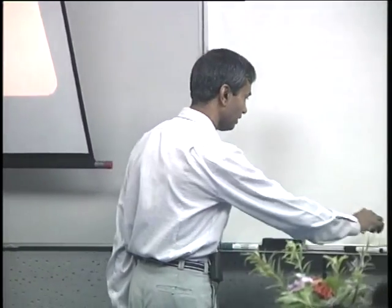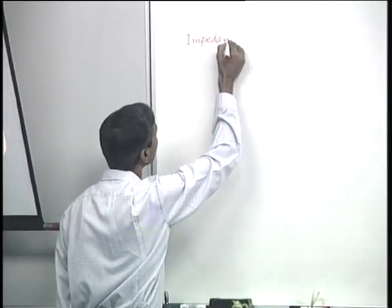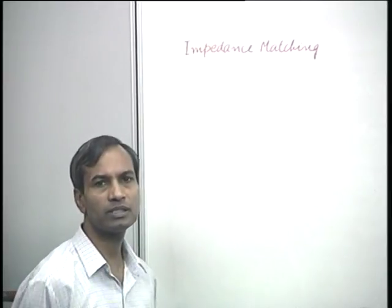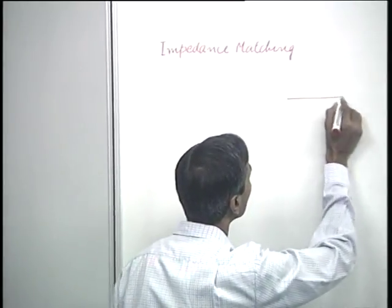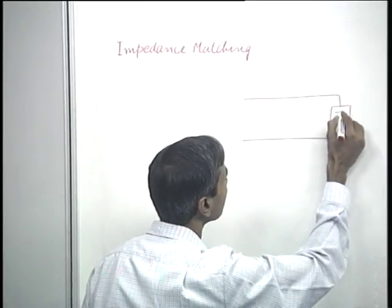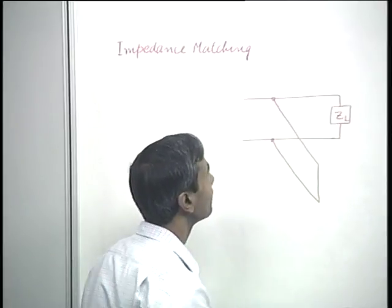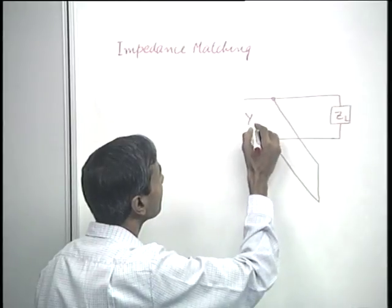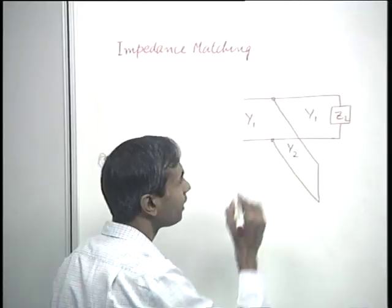This impedance matching was discussed in the last lecture, and we considered two possible schemes: one using a single stub and the other using a double stub. The single stub configuration connects a length of transmission line, usually short-circuited, called the stub. The concept we consider today is the situation when the characteristic admittance of the main transmission line and of the stub transmission line are different.